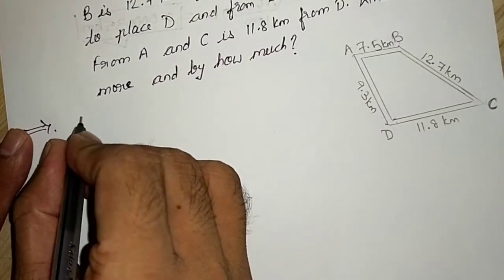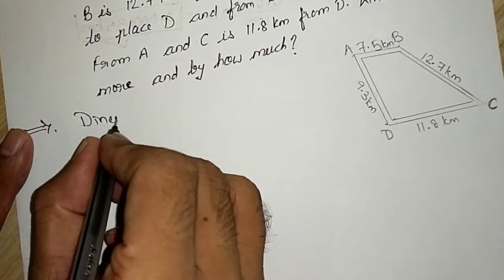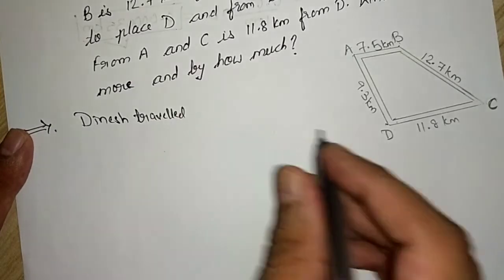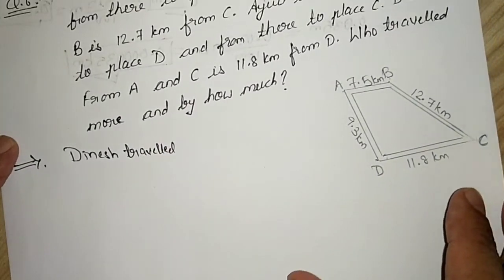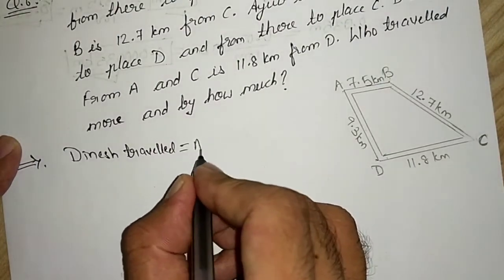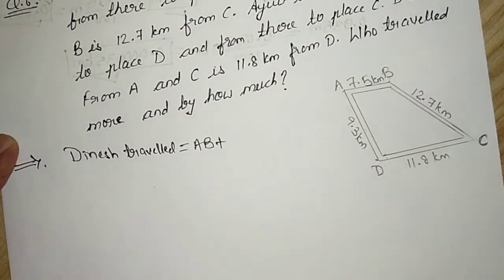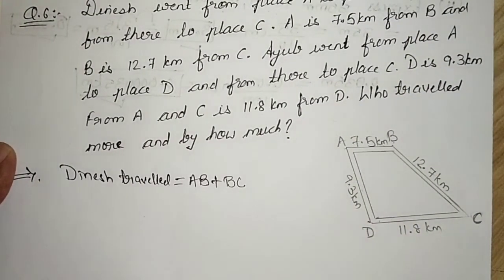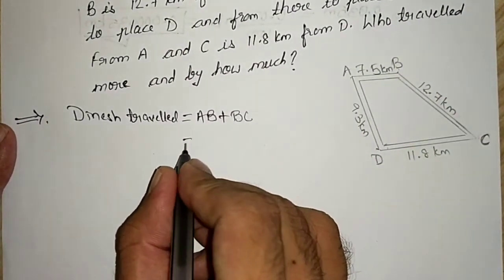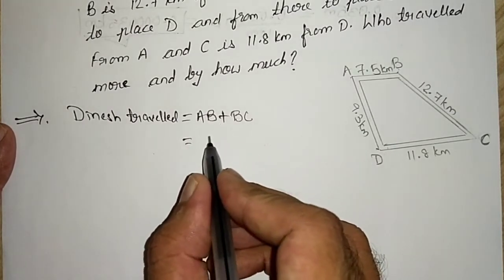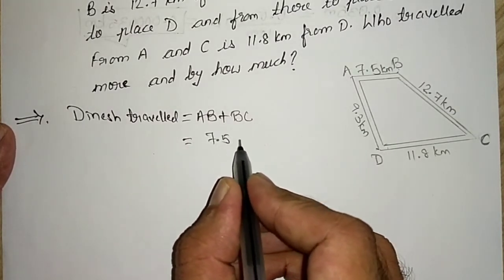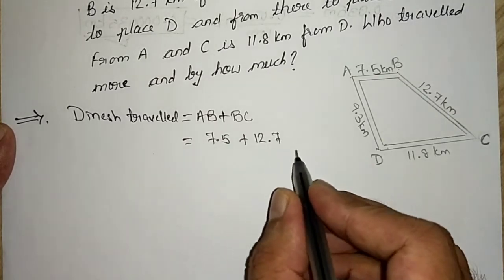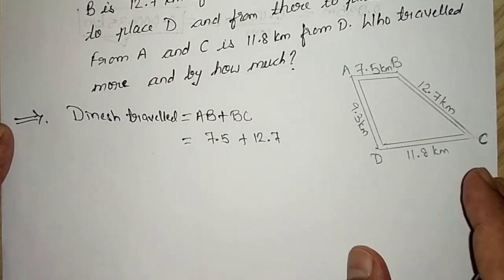So I will write, Dinesh travelled from A to B, that means distance A to B plus distance B to C. What is A to B? A to B is 7.5 km and B to C is 12.7 km. So addition of them,